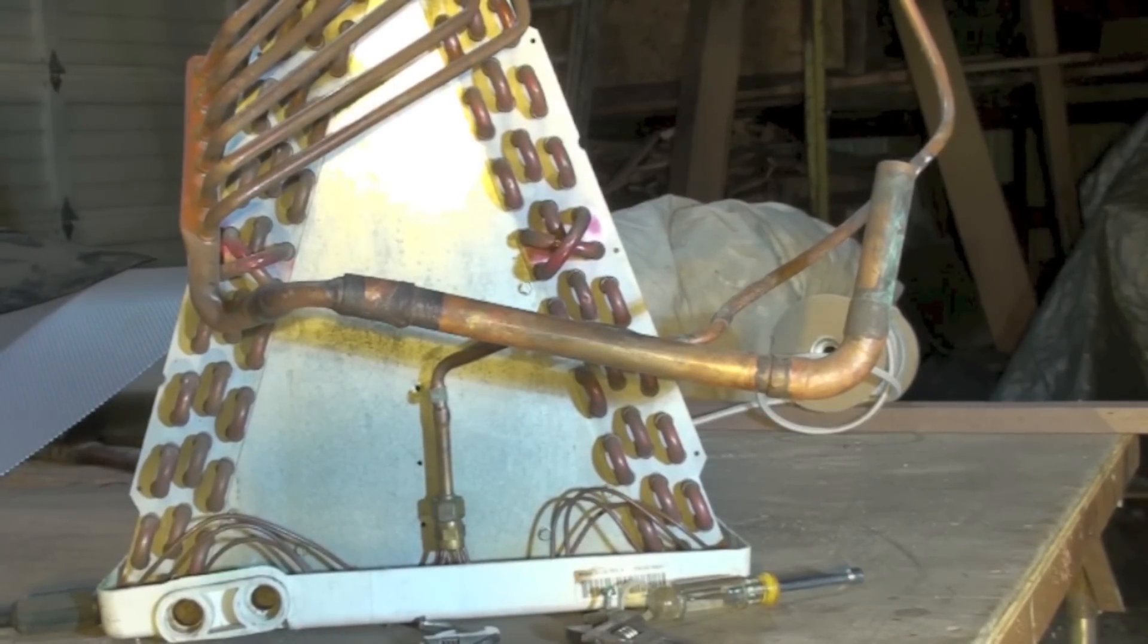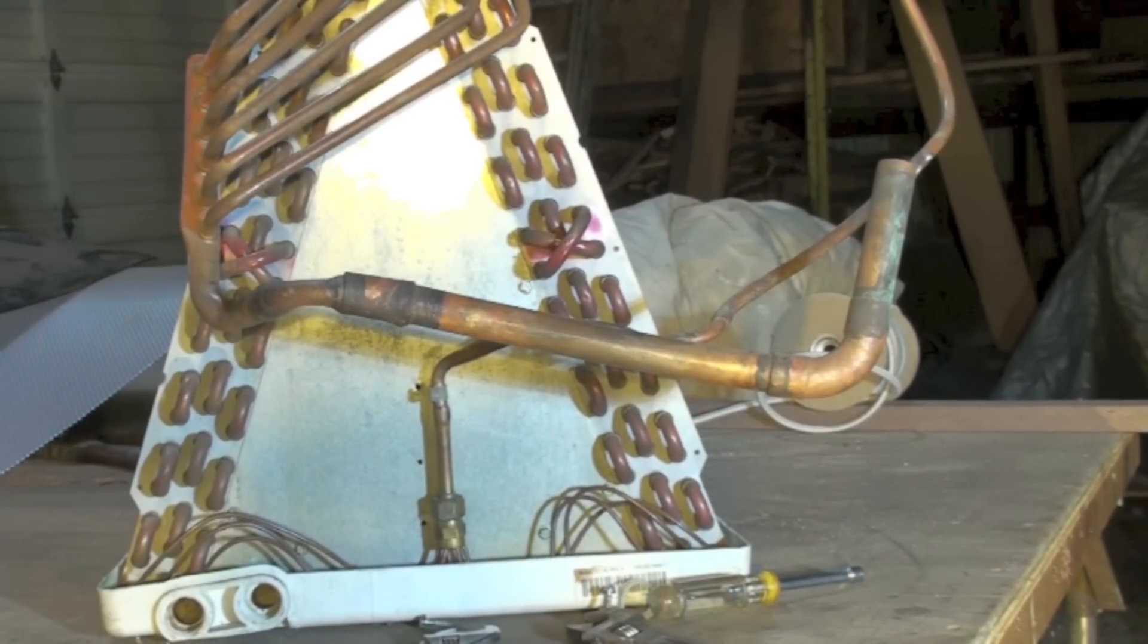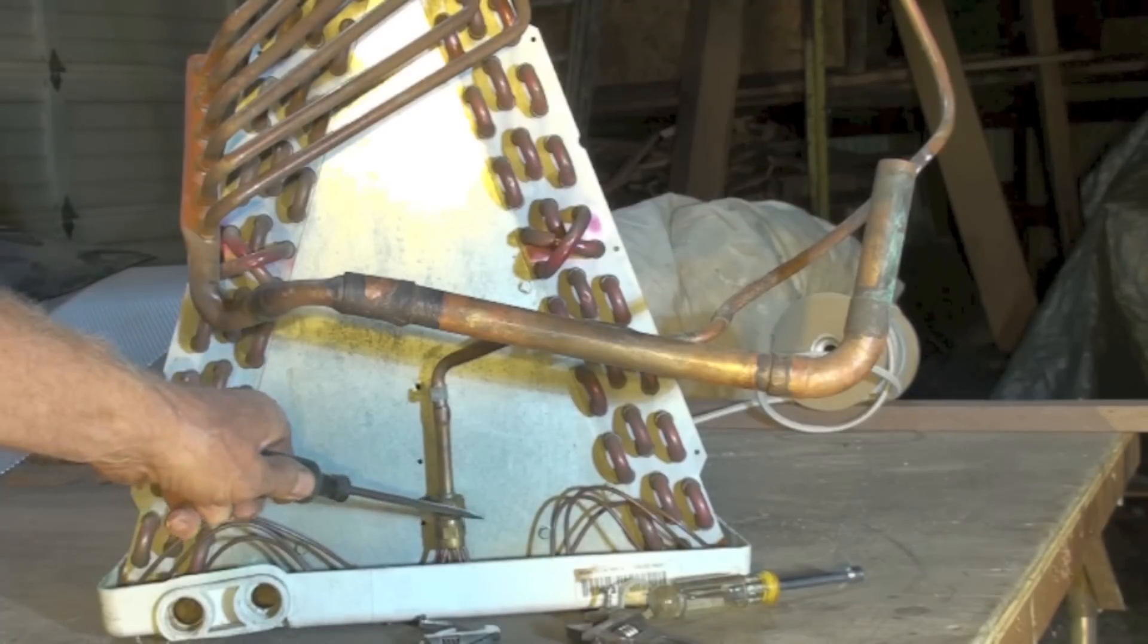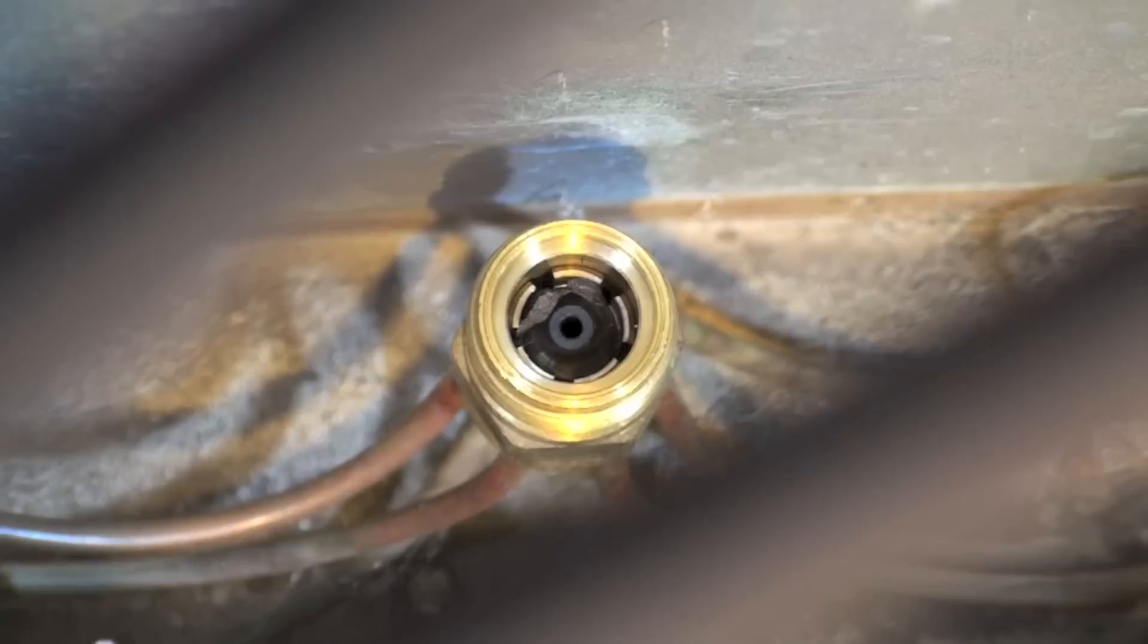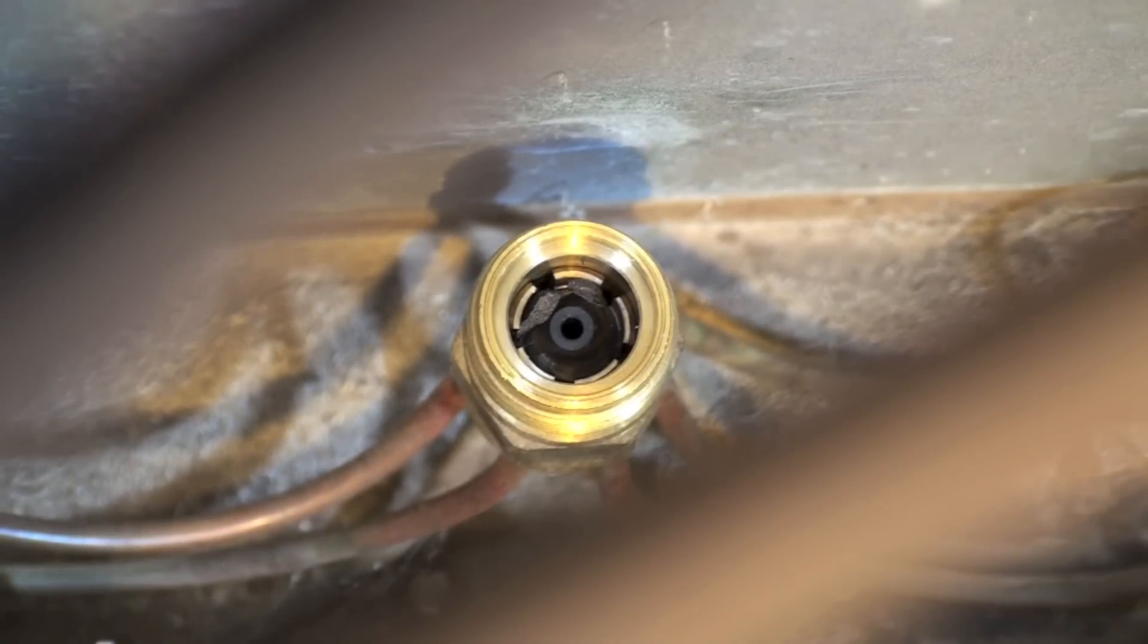This one is about the fixed orifice device used on many air conditioners now. The fixed orifice is right there, and we're going to pull that apart and take a look at what's inside.